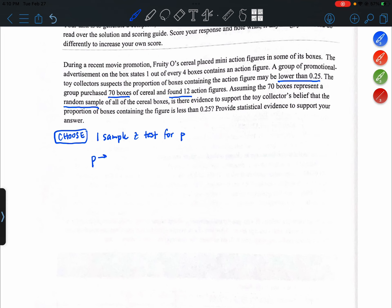Let's define our parameter. So P in this problem represents the true proportion of all boxes with an action figure.